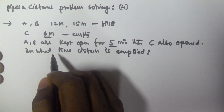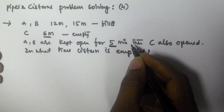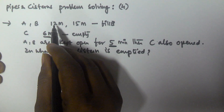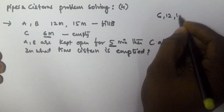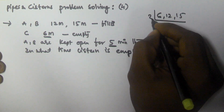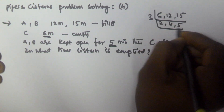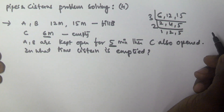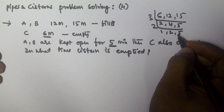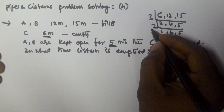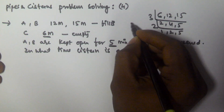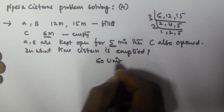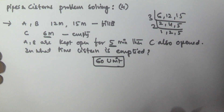In all three cases the tank is the same and the capacity is constant, so I am taking the capacity of the tank as the LCM of 6, 12, and 15. Computing the LCM of 6, 12, and 15 gives us 60. So the capacity of the tank is 60 units.